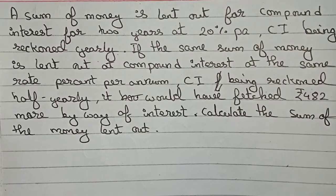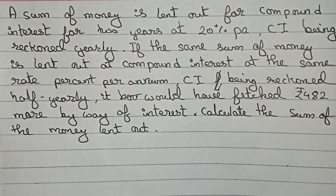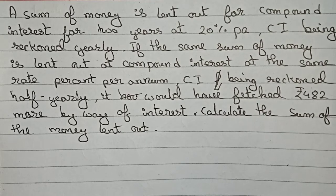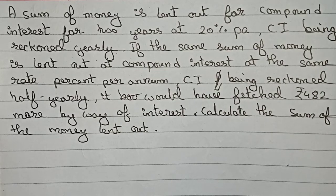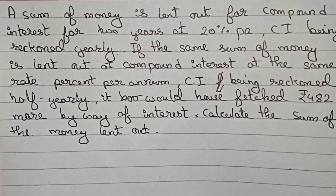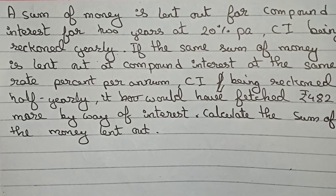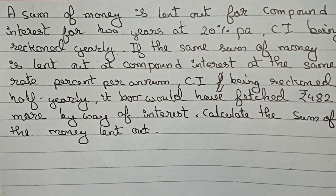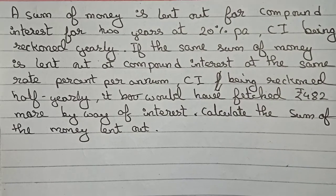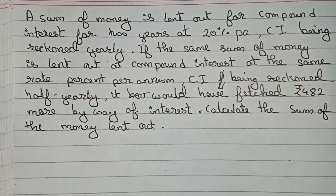Hello guys, welcome to this video. The question is: a sum of money is lent out for compound interest for two years at 20% per annum, CI being reckoned yearly. If the same sum of money is lent out at the same rate percent per annum, CI being reckoned half-yearly, it will have fetched ₹482 more by way of interest. Calculate the sum of money lent out.